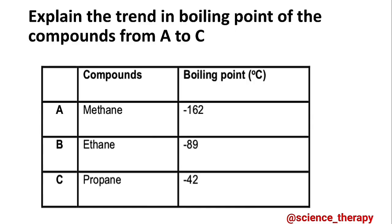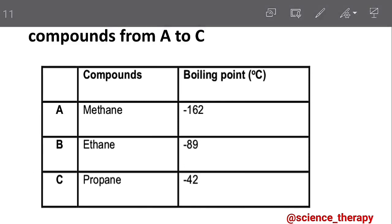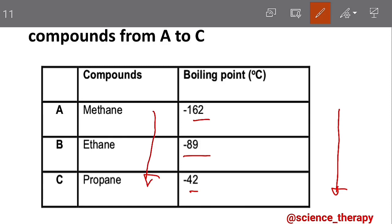The question says: explain the trend in boiling point of the compounds from A to C. The first thing to do is observe what is going on with the boiling point. From negative 162 to negative 89 to negative 42, we can see there's an increase in the boiling point. When we look at the compounds, they are also increasing in chain length — from methane with one carbon, ethane with two carbons, propane with three carbons. So as we go from A to C, there's an increase in chain length, surface area, and molecular size.